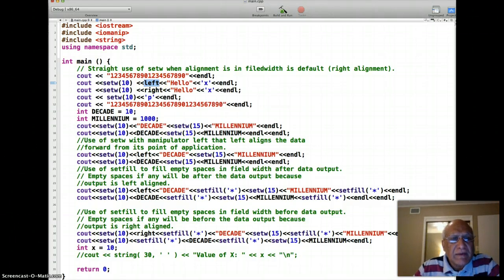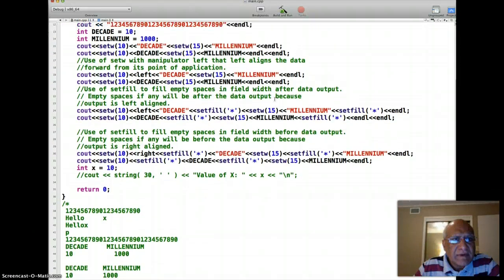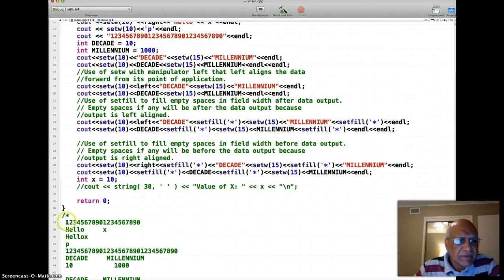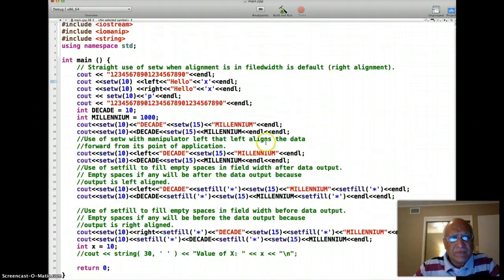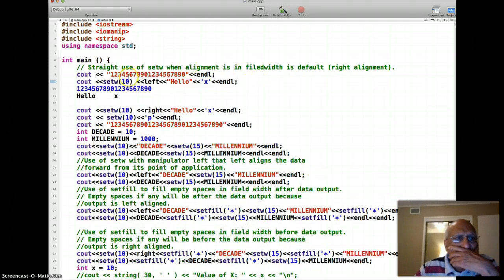On this line here I'm setting the field width to be 10. Actually I already changed it—I'm saying align next output to the left, and then I'm printing hello. But notice after that I do not have a setW and I have a character X.